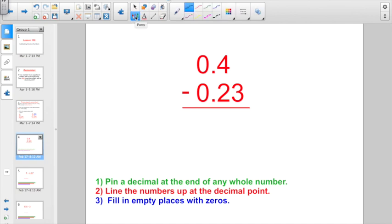Here, we're trying to subtract 0.4 minus 0.23. I already lined them up at the decimal point. Just bring the decimal point straight down. But I do have to go and fill in an empty spot with a zero. I can't go zero minus three, so I have to go and borrow. Bring one over.